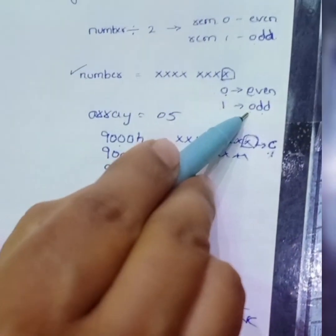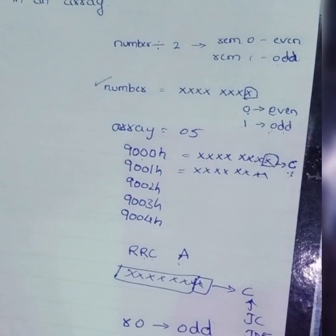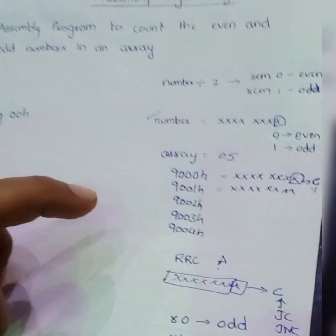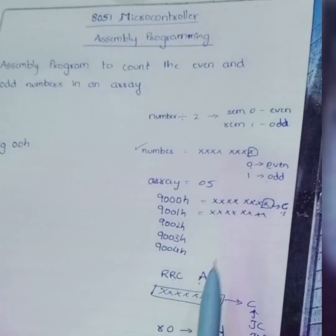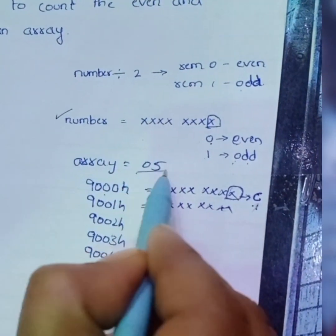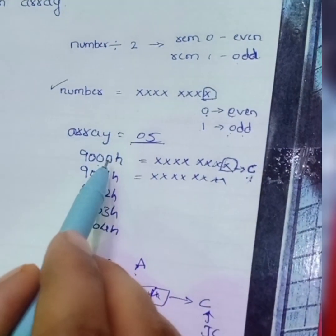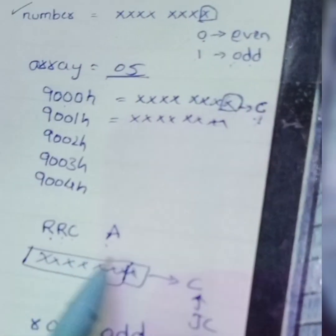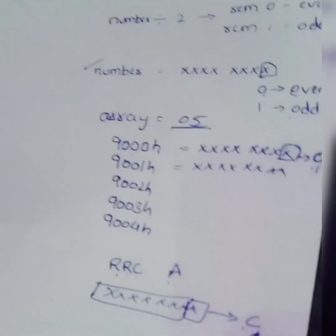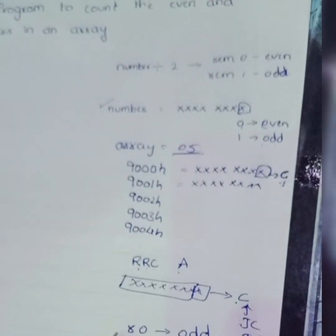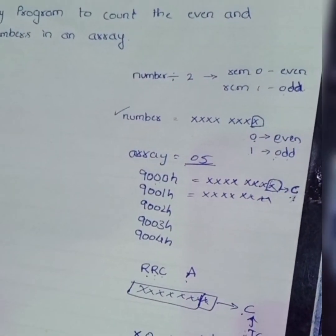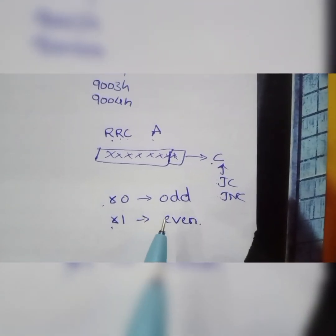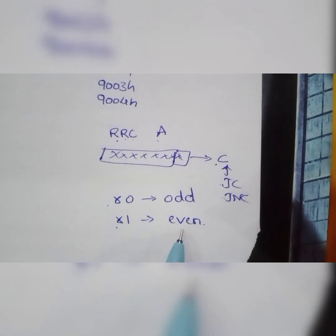We shall also make one arrangement: the total count of even numbers will be stored in register R1, and the total count of odd numbers will be stored in register R0. This is the pre-task we have to do before writing the program. From each memory location, we take the data into A, rotate it using RRC so the LSB moves to the carry, then check with JC or JNC. If it is odd, we increment R0; if it is even, we increment R1.